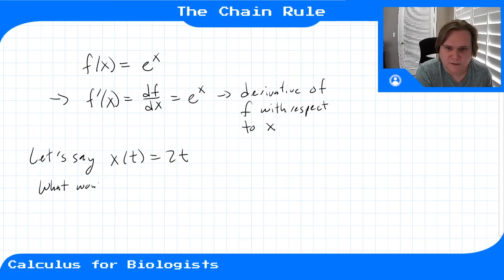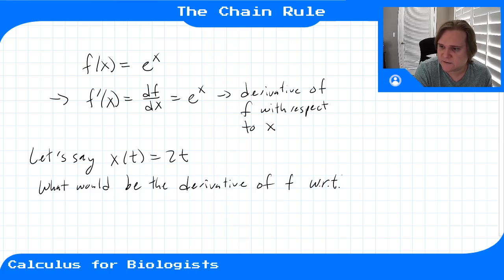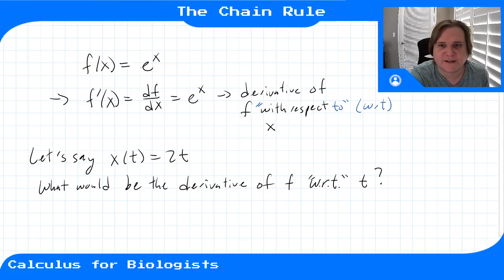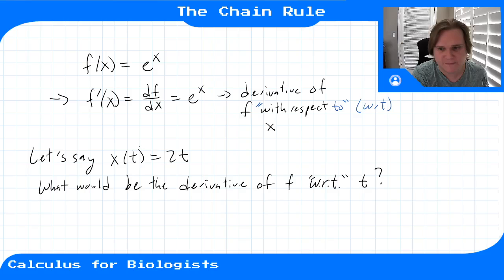Well then, what would be the derivative of this function f with respect to this new variable t? For example, if x is the number of individuals in a population, then f of x tells you how many they produce — e to the x. But if x is a function of time, then df/dt asks for the rate of change with respect to time, which is a completely different question.